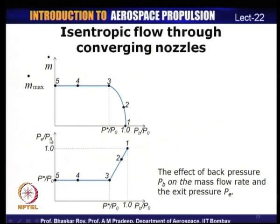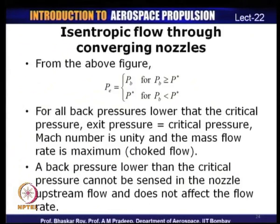The exit-to-stagnation pressure ratio remains the same after state 3, because it is choked and does not change after the flow reaches the critical state. When exit pressure Pₑ equals back pressure Pᵦ for Pᵦ ≥ P*, and Pₑ equals critical pressure P* for Pᵦ < P*, the Mach number is unity and mass flow rate is maximum — this is the choked flow condition.